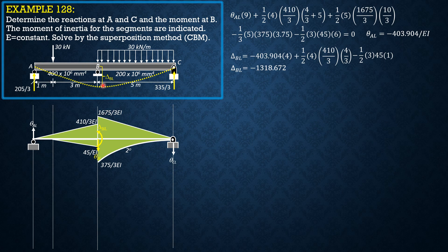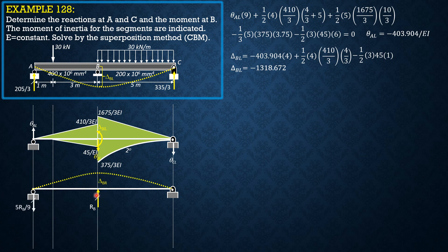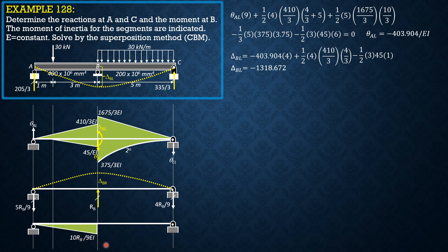Now we apply an upward load which is reaction R_B at B. This acts at B; the span is 4 on the left and 5 on the right. The reaction due to R_B downward at C is 5/9 × R_B and at A is 4/9 × R_B. The moment diagram by parts centered at B gives: (4/9 × R_B) × 4 divided by 2 (since moment of inertia is 2I) equals 10R_B/9, and the moment of (4/9 × R_B) × 5 equals 20R_B/9.